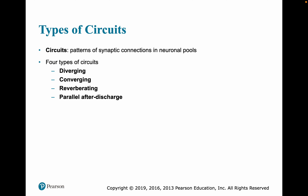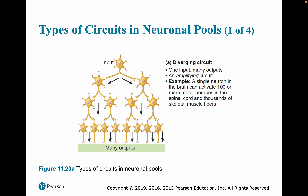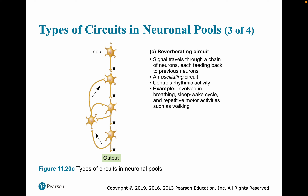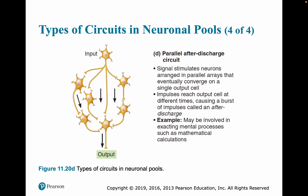There are also individual circuits to discuss. The four types are diverging, converging, reverberating, and parallel after discharge. In a diverging circuit, one input affects numerous neurons and their outputs. In a converging circuit, several different neurons converge on a single circuit or output. In a reverberating circuit, information oscillates back to some of the original neurons — these are thought to be involved in breathing, sleep-wake cycles, and repetitive motor activities. In a parallel after discharge circuit, the signal stimulates neurons arranged in parallel arrays, probably involved in exacting mental processes such as mathematical calculations.